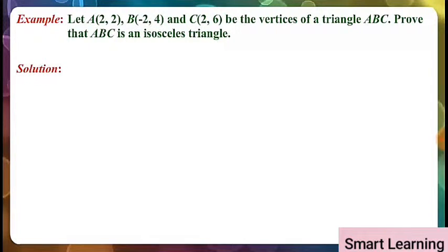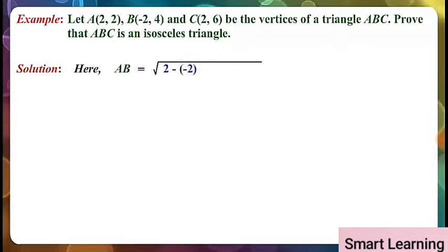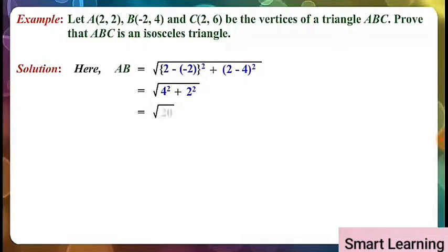Let's solve this. AB is equal to under root of (2 minus (-2)) whole square plus (2 minus 4) whole square, which equals under root of 4 squared plus 2 squared, equal to under root 20, equal to 2 root 5.